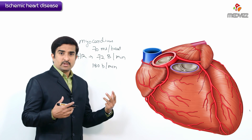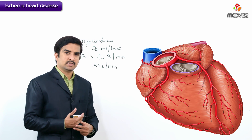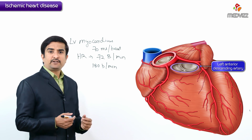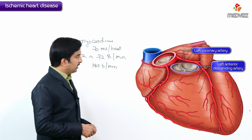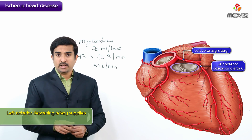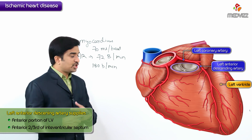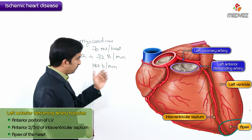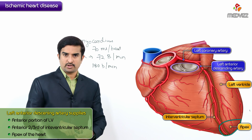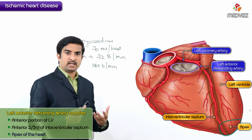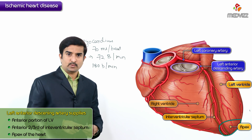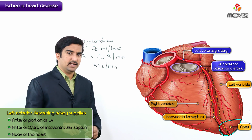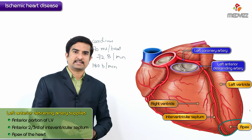Now let us discuss the coronary arteries and understand which arteries supply which part of the heart. The left anterior descending artery, a branch of the left coronary artery, distributes blood mainly to the anterior portion of the left ventricle, the anterior two-thirds of the interventricular septum, and the apex of the heart. The apex is the thickest part of the myocardium, formed mainly by the left ventricle, and therefore requires a large amount of blood supply, making the LAD a critically important artery.